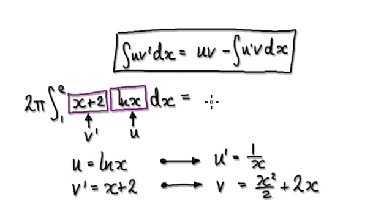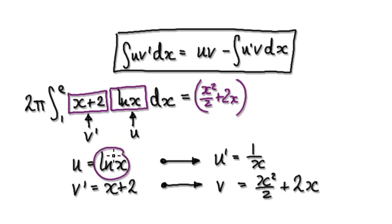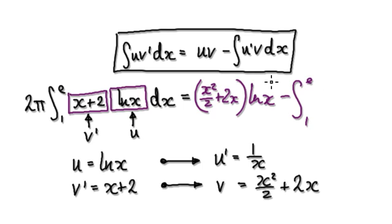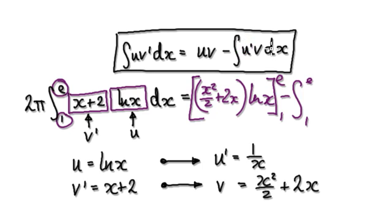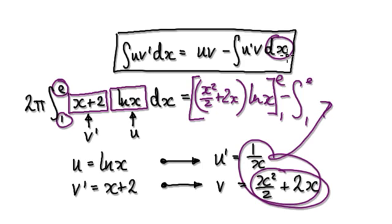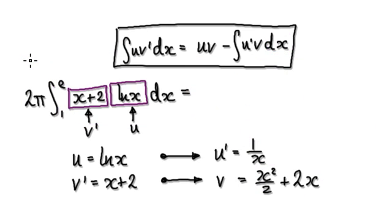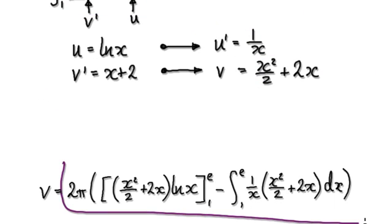Now blindly follow the integration by parts formula: get u times v. That would be (x squared over 2 plus 2x) times natural log of x. Then take away the integral from 1 to E of u prime times v — which is (x squared over 2 plus 2x) times the derivative of natural log of x, plus your dx. This whole thing then becomes the next expression.